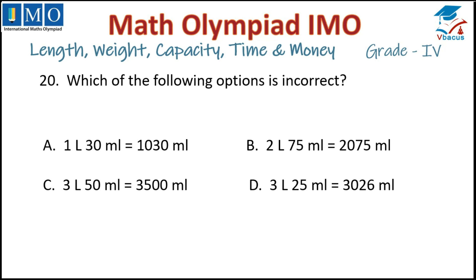Question 20: Which of the following options is incorrect? We know 1 litre equals 1000 millilitres. So 1000 plus 30 equals 1030 — correct. 2 litres 75 millilitres: 2000 plus 75 is 2075 — correct. For 3 litres 50 millilitres, it should be 3000 plus 50, giving 3050, but they have written 3500. So that option is incorrect. Tick option C.